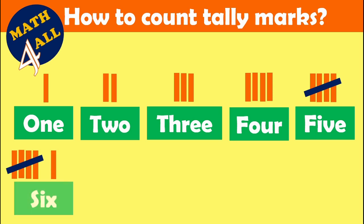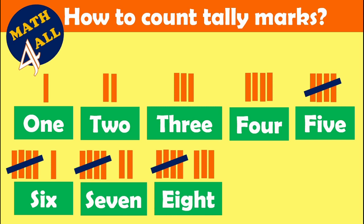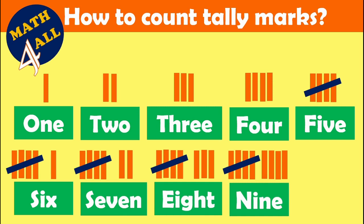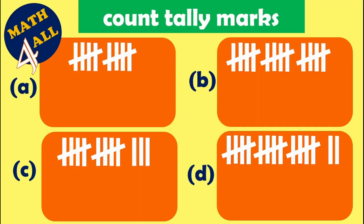When we get to six, we start another set: five plus one equals six tally marks. Five plus two means seven tally marks. Five plus three is eight tally marks. Five plus four is nine tally marks. Five plus five equals ten tally marks.